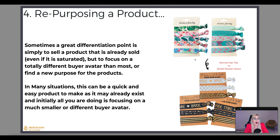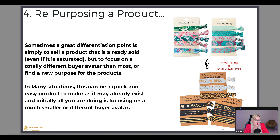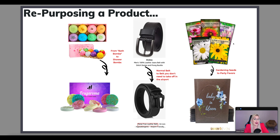The fourth way of differentiating is repurposing a product. What do I mean? Sometimes a great differentiation point is simply to sell a product that's already sold — even if it's saturated — but focus on a different buyer avatar that most aren't focusing on, or find a totally new purpose for the product. In many situations this can be quick and easy since the product already exists. A great example: normal hair ties, but the minute I write 'bride' or 'bride tribe' on them, they become a bridal shower favor gift.